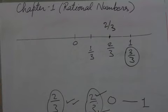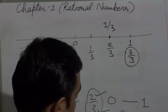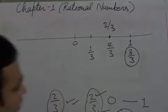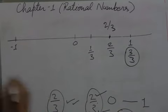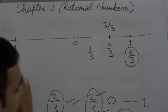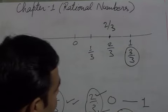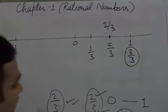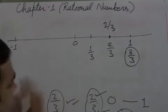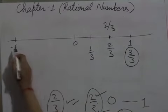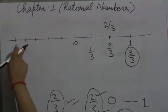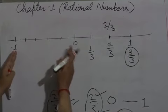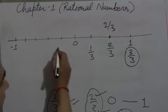Now let's take an example of a negative rational number: minus 2 upon 5. Since the whole number part is missing, this number lies between 0 and minus 1. The denominator is 5, so we divide this space into 5 equal parts by drawing 4 marks. You may use a ruler to make the parts equal. So from 0 to minus 1, we draw the first, second, third, and fourth marks — these 4 marks divide the space into 5 equal parts.